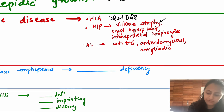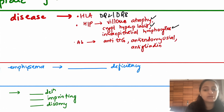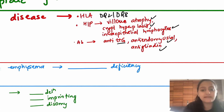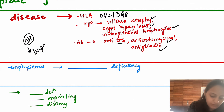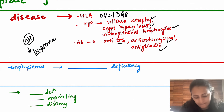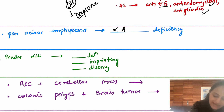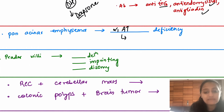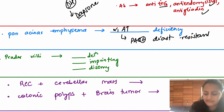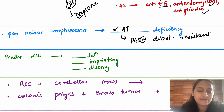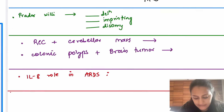In celiac disease histopathology, you see villous atrophy, crypt hyperplasia, and intraepithelial lymphocytes. Antibodies are anti-tTG (tissue transglutaminase), anti-endomysial, and anti-gliadin. It is associated with dermatitis herpetiformis, treated with dapsone. Panacinar emphysema indicates alpha-1 antitrypsin deficiency, which can also affect the liver — the stain is PAS-positive, diastase-resistant.